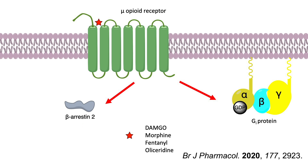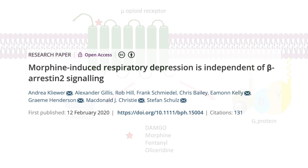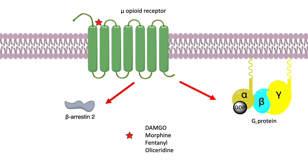Some recent studies also demonstrated that the mu-opioid agonists morphine and fentanyl induce respiratory depression and constipation in beta-arrestin-2 knockout mice to the same extent as that observed in wild-type mice. These studies do not support the original suggestion that beta-arrestin-2 signaling plays a key role in opioid-induced respiratory depression and call into question the concept of developing G-protein-biased mu-opioid receptor agonists as a strategy for the development of safer opioid analgesic drugs. On the other hand, there are in vitro, in vivo, and clinical studies supporting the view that biased agonism results in comparable analgesia compared with traditional opioids at a comparable or decreased risk of adverse effects.